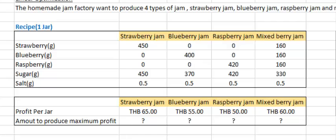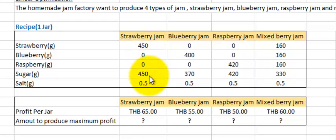Let's see the recipe. For the strawberry jam, it takes 450 grams of strawberry, 450 grams of sugar, and 0.5 grams of salt.